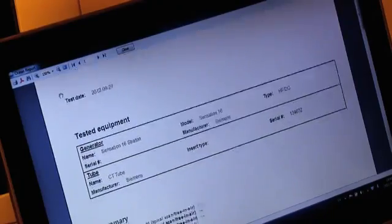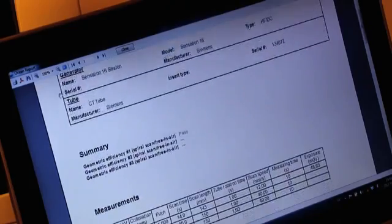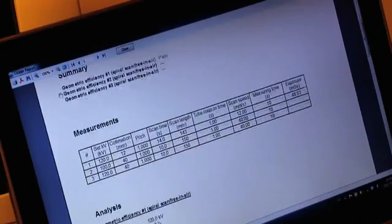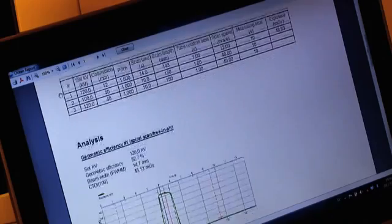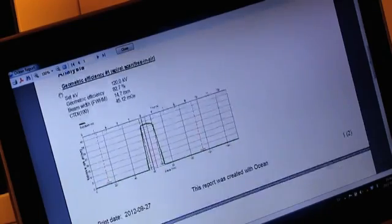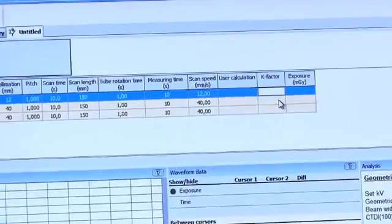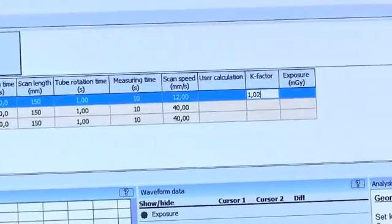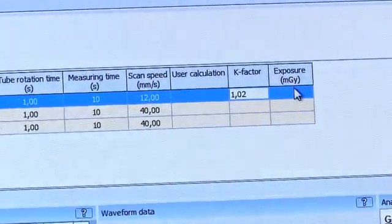To print a customized report, just go to Reporting. For Ocean professional users, you can of course customize the measuring template any way you like. For instance, you can add your own calculations and add your own K-factor.